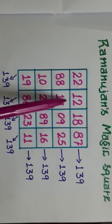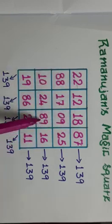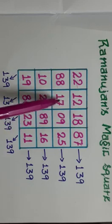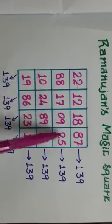Not only that. Each square, we will be getting 139. Each middle square also, we will be getting 139.